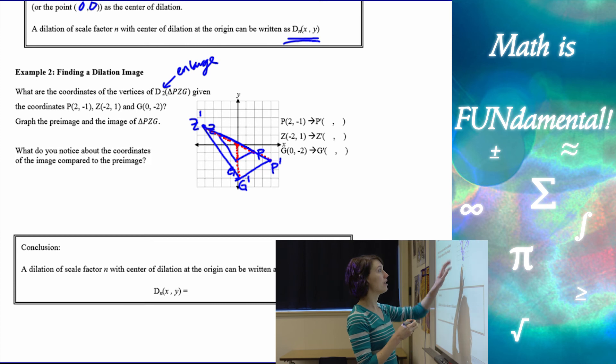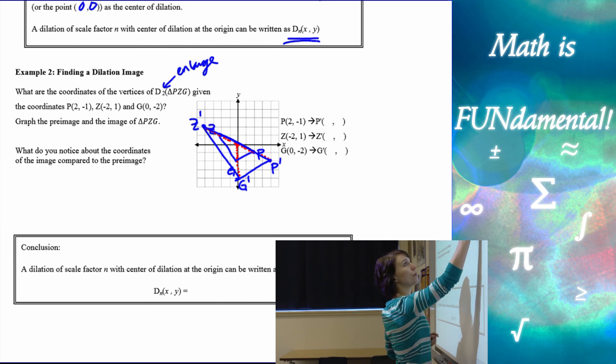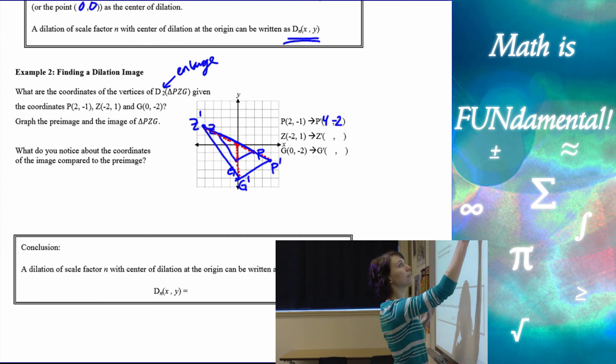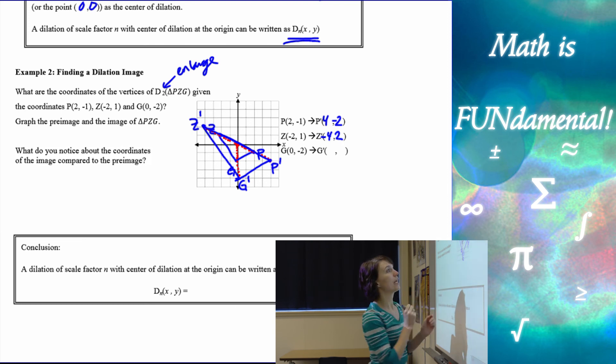So let's look. P prime ended up at 1, 2, 3, 4, negative 2. Z prime ended up at 1, 2, 3, negative 4, positive 2. And G ended up at 0, negative 4.